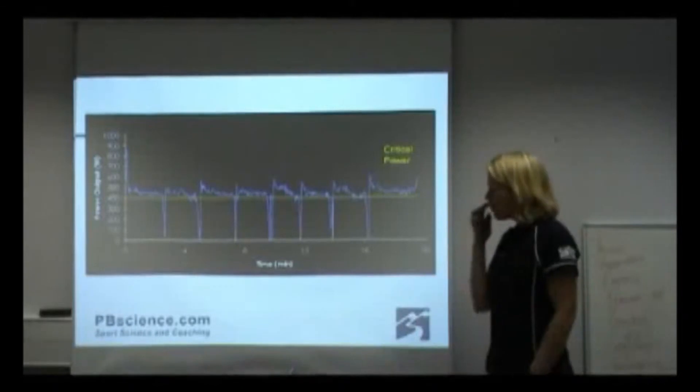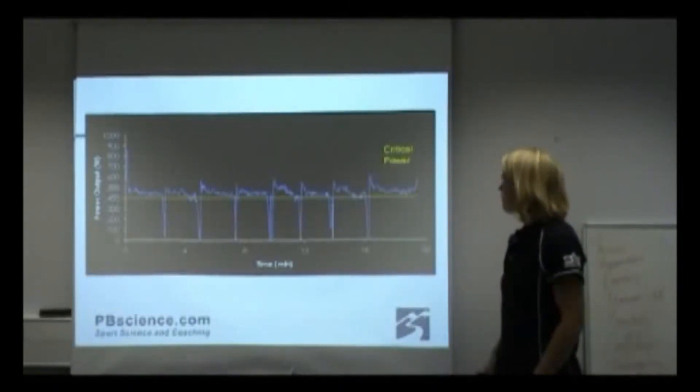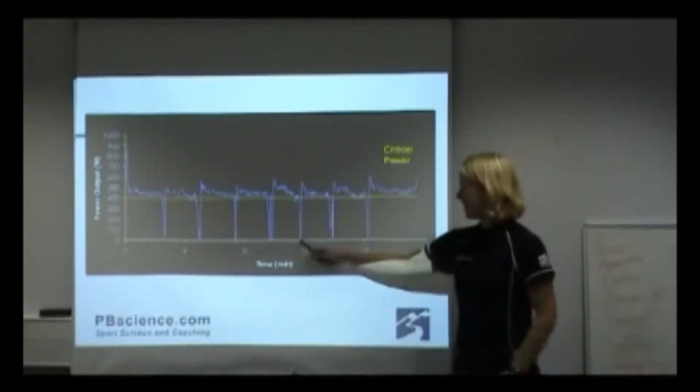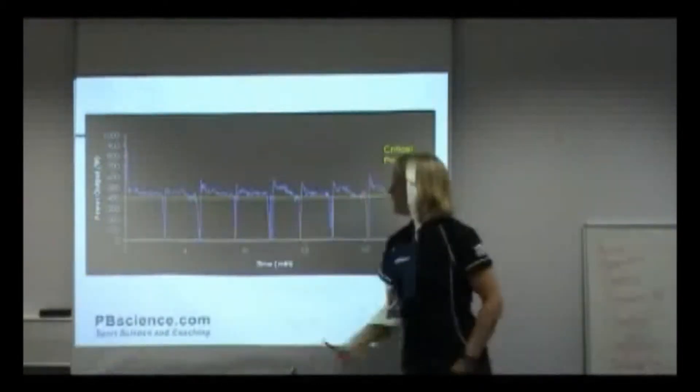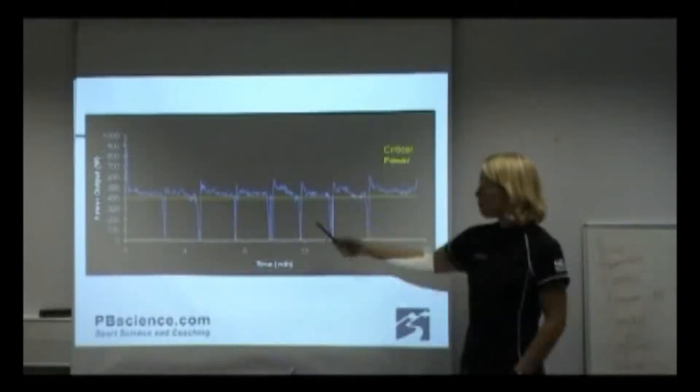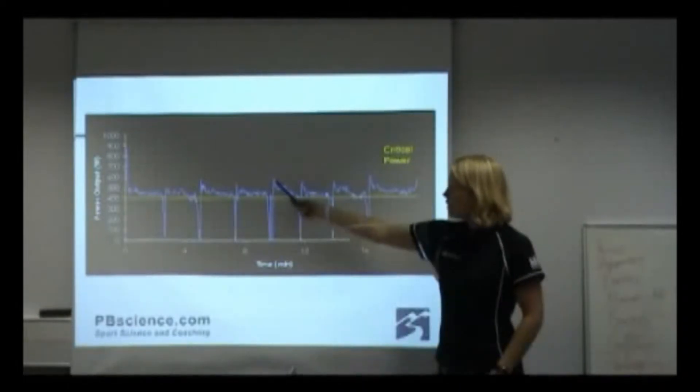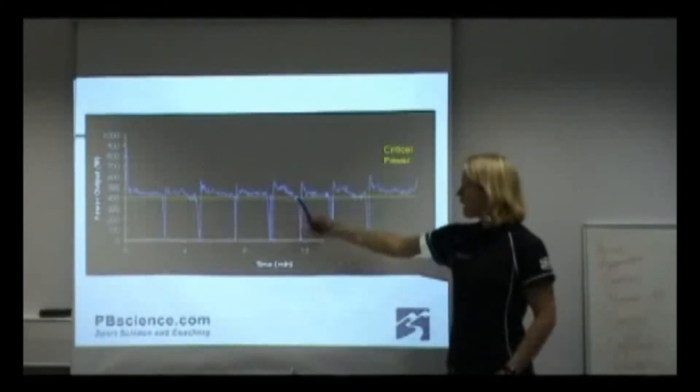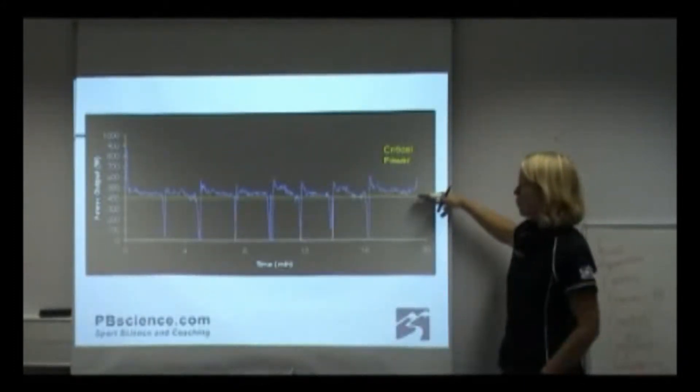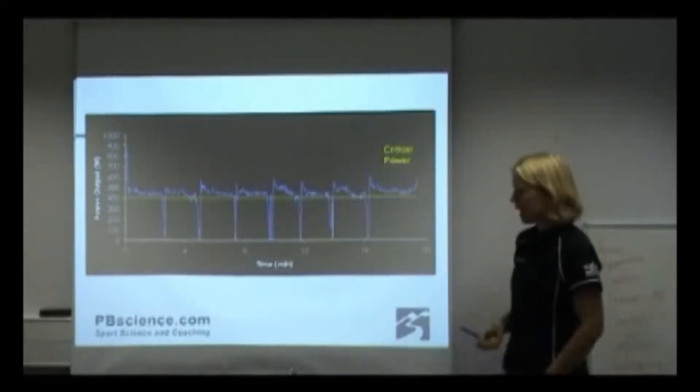Some of you have seen this graph before. It's a 10-mile time trial trace with lots of roundabouts. The power's dropped off. But you can see, after each roundabout, this athlete here is accelerated to get the speed up and then settled back into their rhythm. But you can see the average power here, just over 400 watts, is approximately this athlete's critical power.